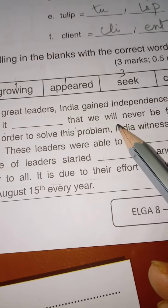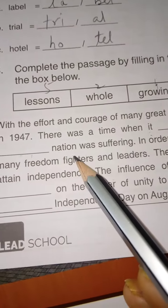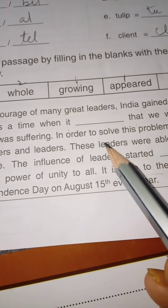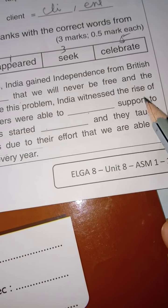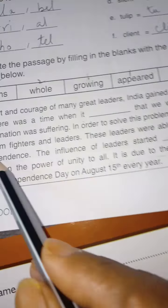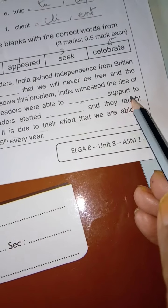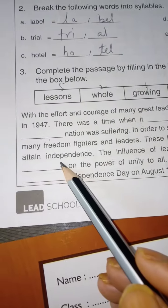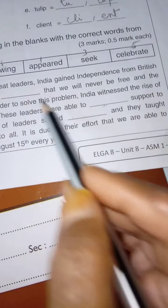First one, right, appeared that we will never be free and the whole nation. Here, right, whole. Number 2, whole. Nation was suffering. In order to solve the problem, India witnessed the rise of freedom fighters and leaders. These leaders were able to seek support to attain independence. The influence of leaders.